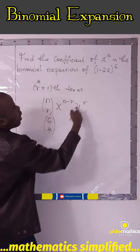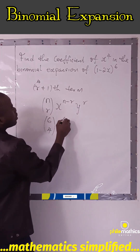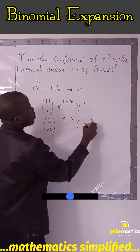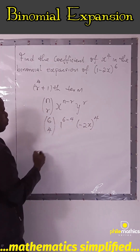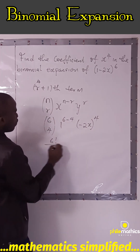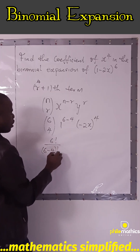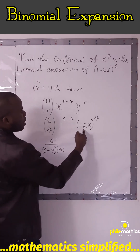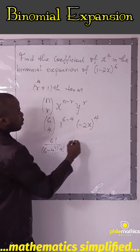Our x here is 1, our y is minus 2x. So we get: 1 to the power (6 minus 4), times (minus 2x) to the power 4. The combination gives us 6 factorial over (6 minus 4) factorial times 4 factorial, and (minus 2x) to the power 4 gives 2 to the power 4, which is 16.